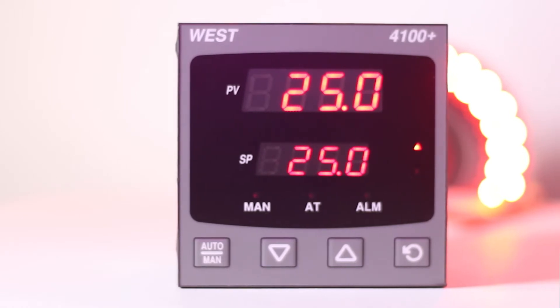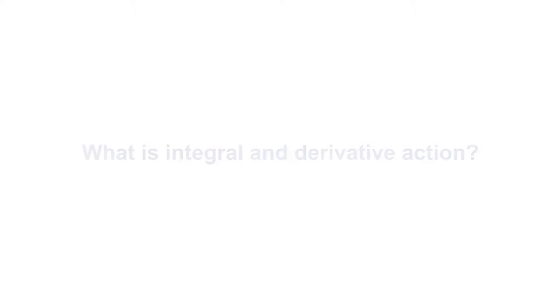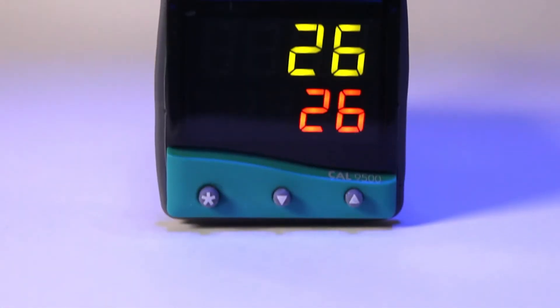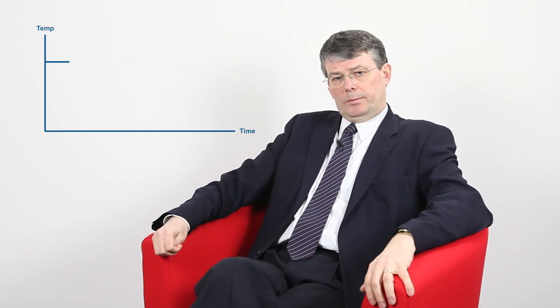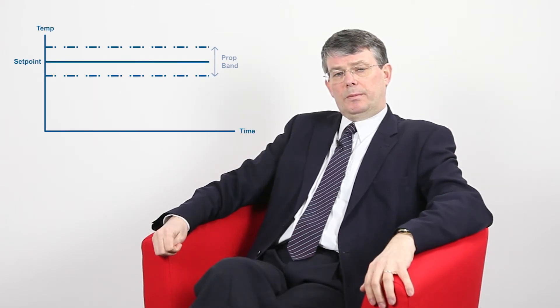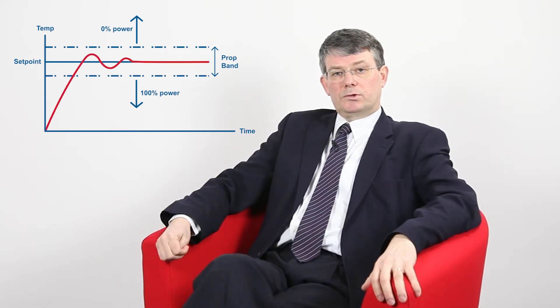First, let's consider why proportional-only control isn't always the complete solution. Consider a controller with a proportional band nominally centered around the set point and adjusted for stable but responsive control. As the process rises through the proportional band towards the set point, the power output is reduced and eventually it will settle at the set point. If something were to cause the process to drop, the power output would be increased as the process fell back through the proportional band, bringing the process back onto control.